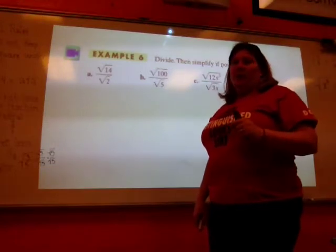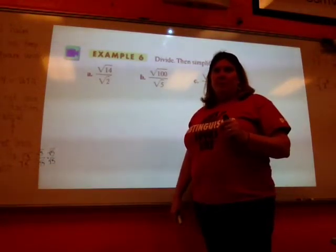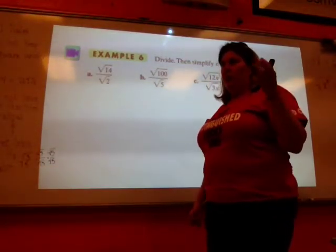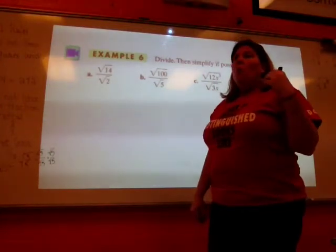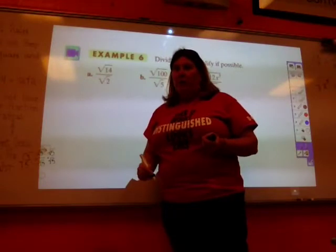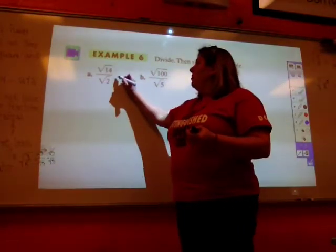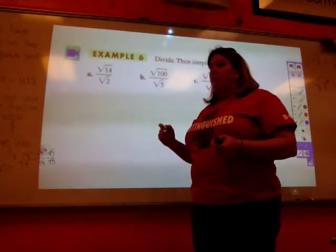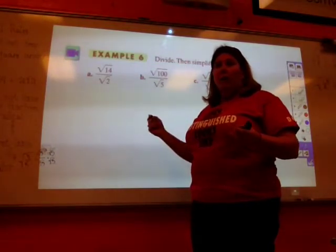There are several different ways you can do this. There are a ton of different ways you can do this. You could go, okay, neither one of those is a perfect square, so I'm just going to go ahead and multiply both top and bottom by the square root of 2 and get rid of it.